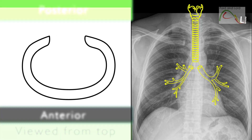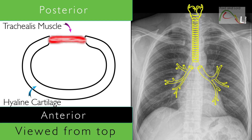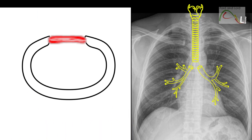The trachea is formed by 16 to 20 C-shaped hyaline cartilages. The posterior end of each cartilage is covered by the trachealis muscle and elastic connective tissue, which together form the fibroelastic membrane. This membrane permits the trachea to stretch and expand slightly during inhalation and exhalation, while the cartilages prevent the trachea from collapsing.